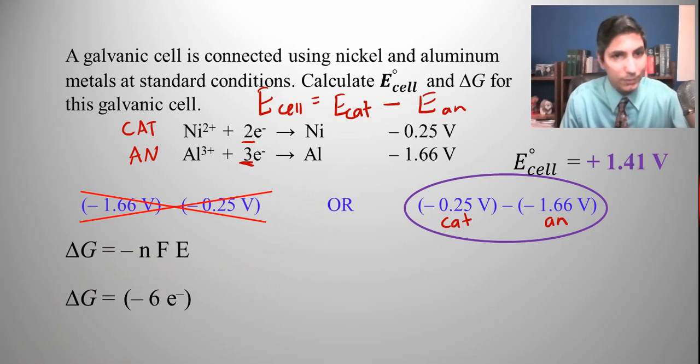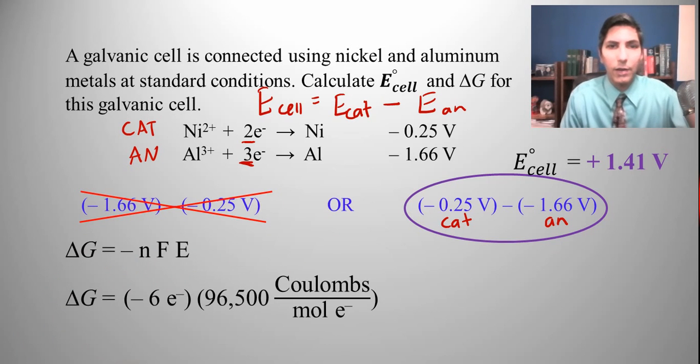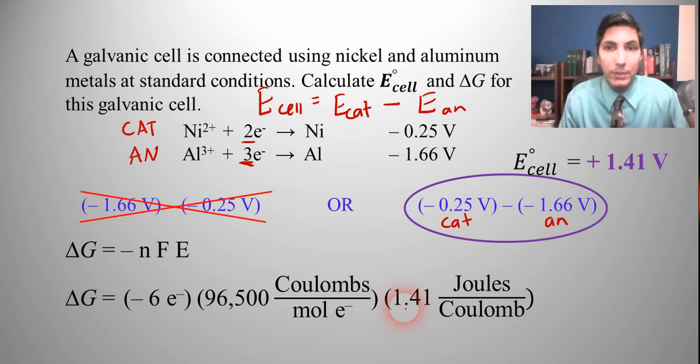F is Faraday's constant, which is 96,500 coulombs per mole of electrons. And then E, the E cell, is 1.41 volts. So I put that in here, 1.41. And once again, I just wrote it as joules per coulomb to show you how the units work out here.